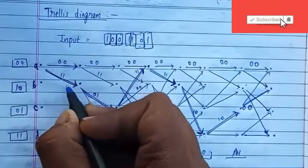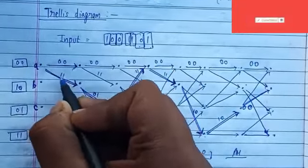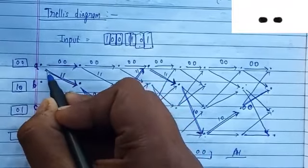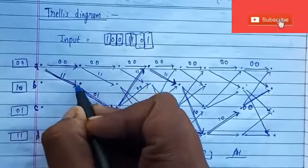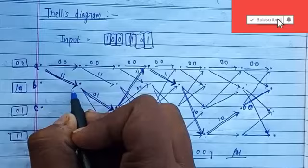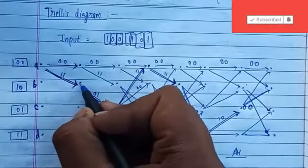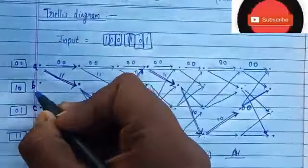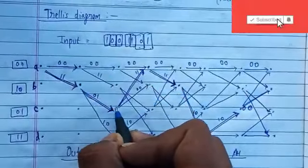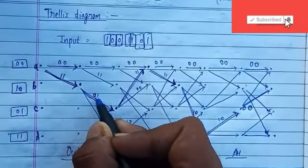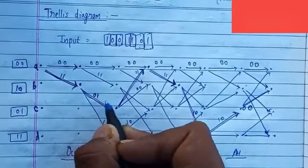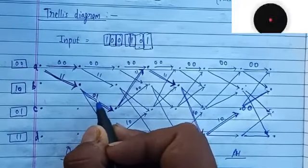Indicate there is a one, so it means if I give one at A, I will reach at B with the output 1 1. Similarly, that's why I double-lined this arrow or this symbol. So now I am on B. If I give zero on B, I will reach at C with output 0 1. That is already mentioned output.